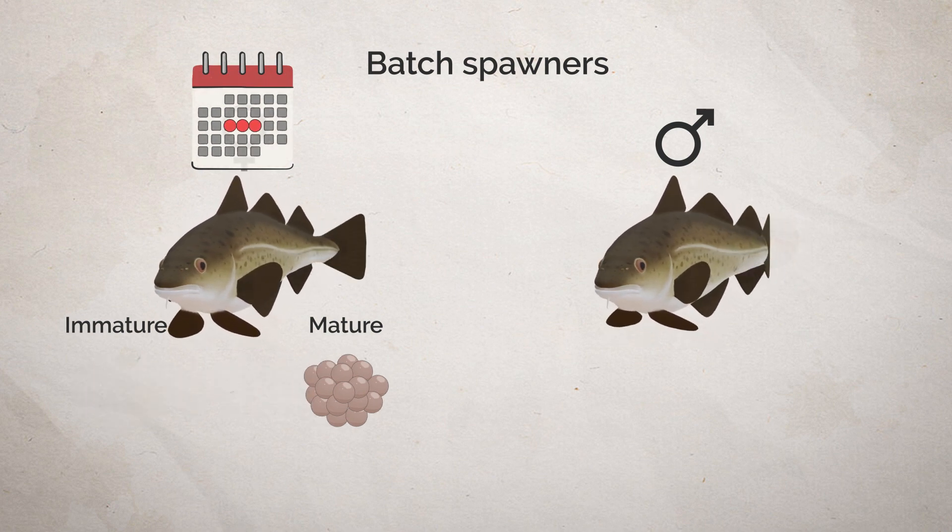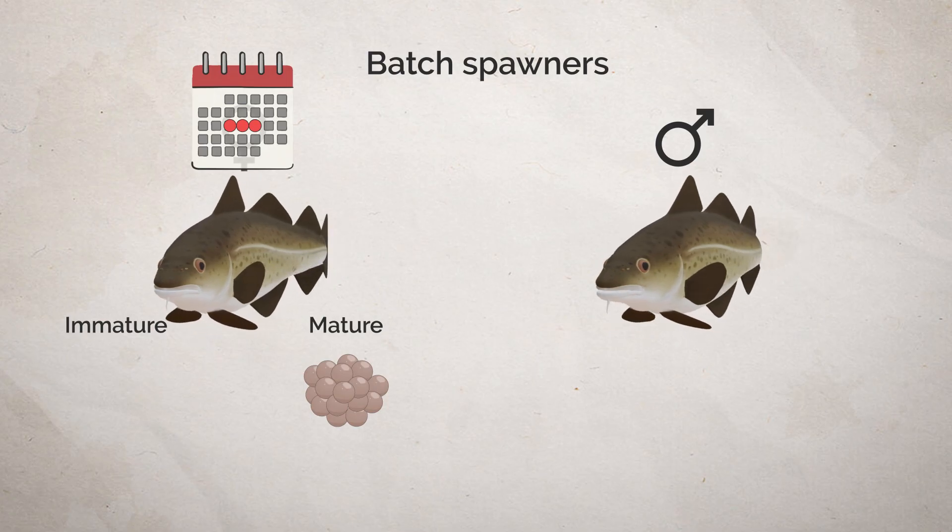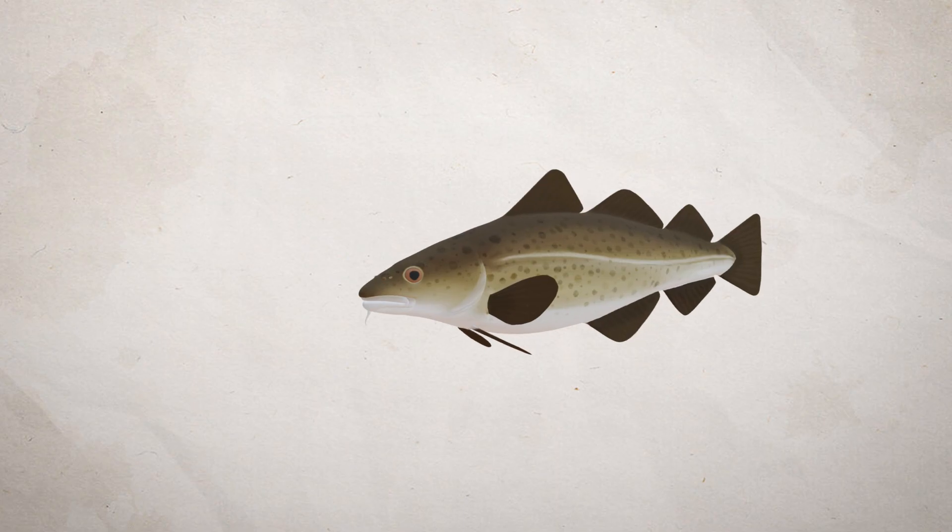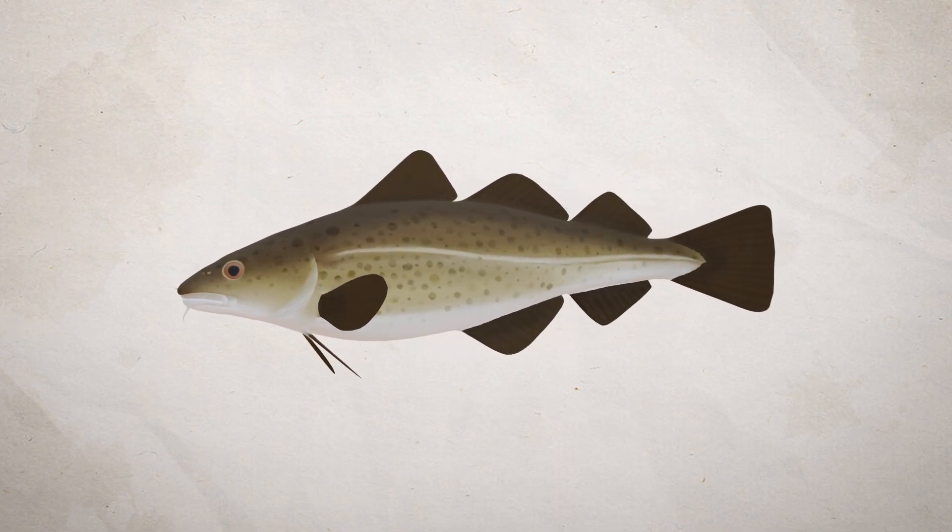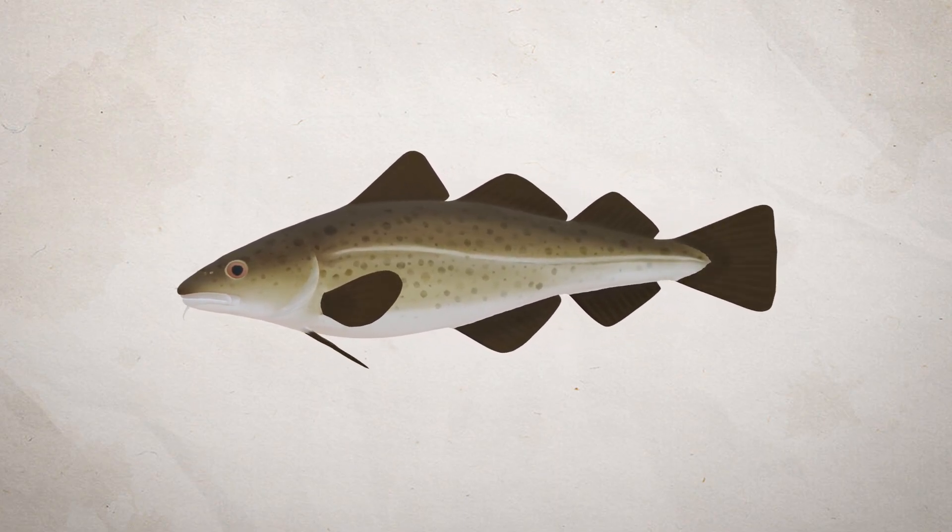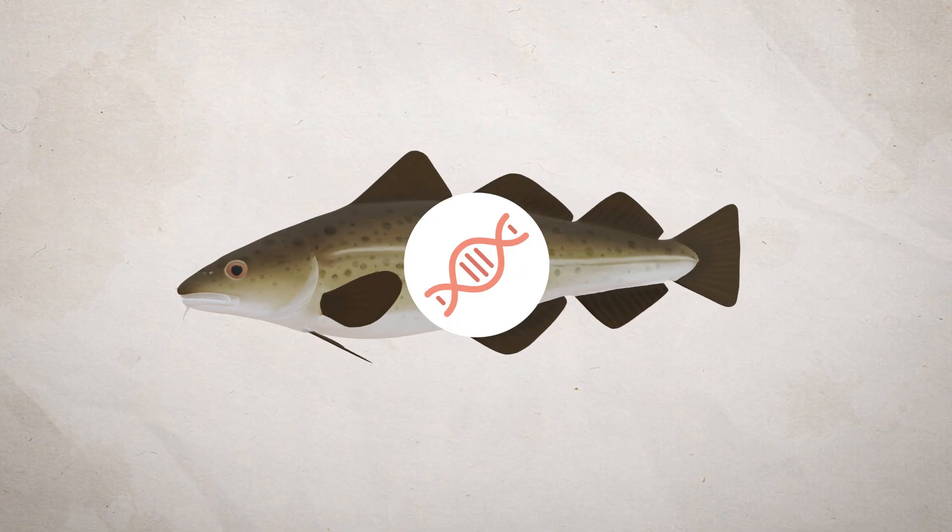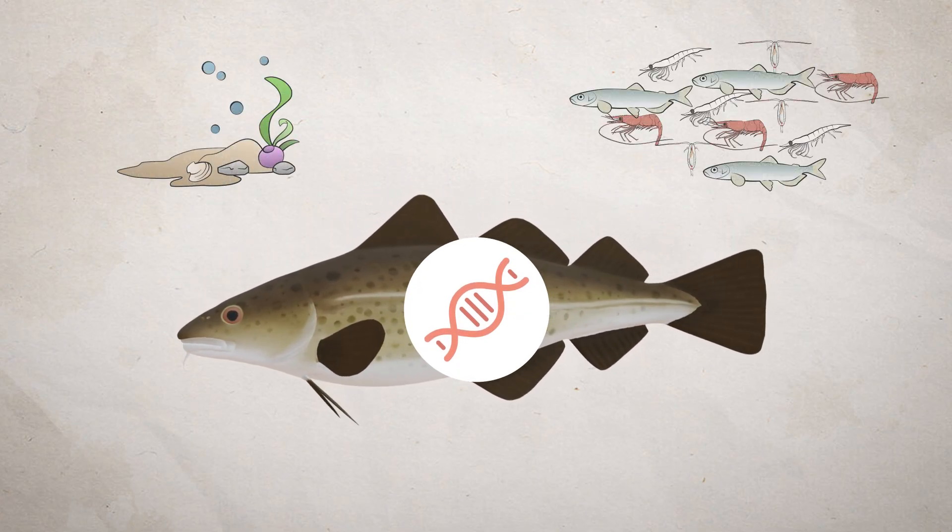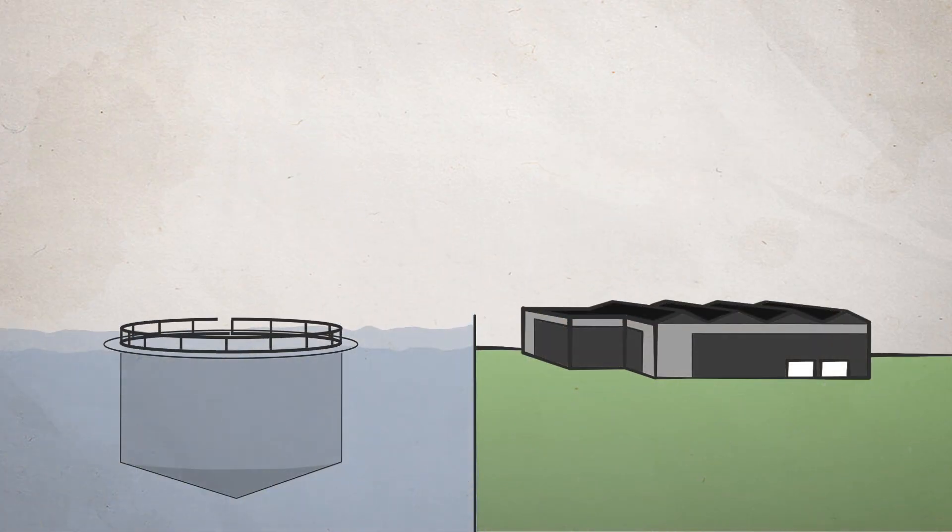After sexual maturity, the cod spawn annually for the rest of their lives unless the conditions are too bad. The biology of cod as a species shows incredible flexibility and adaptability to different environmental and nutritional conditions. When we are developing the species for farming, this provides good conditions, but it also presents several challenges.